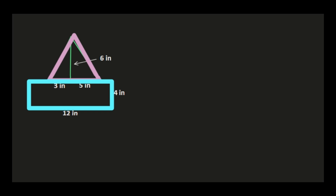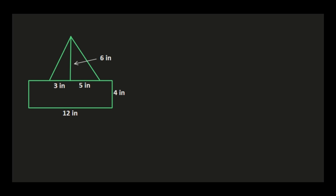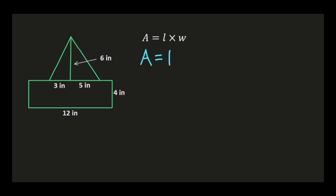I'm going to start with the rectangular piece. The formula for the area of a rectangle is area equals length times width. The length of my rectangle is the longer side — the 12 inches — so I'll substitute 12 in for length. The width is 4 inches, so I'll substitute 4 in for W, giving me area equals 12 times 4. 12 times 4 is 48, so the area of the rectangular portion of my figure is 48.